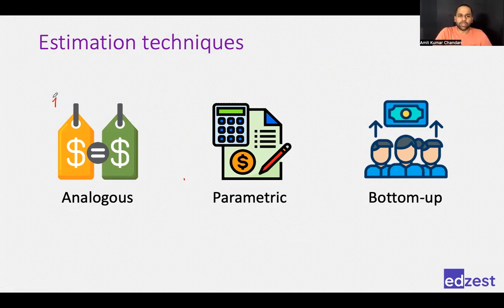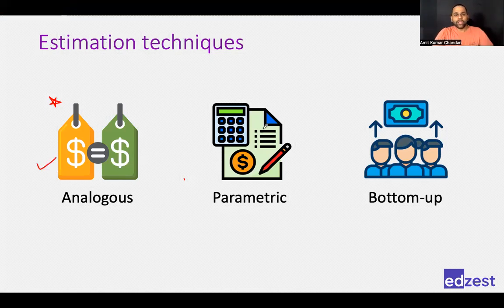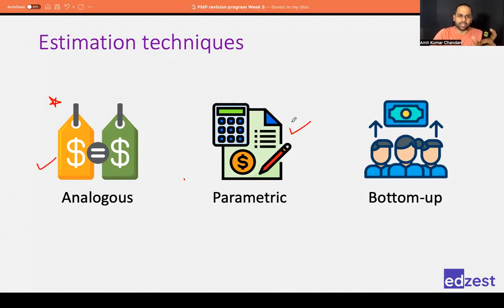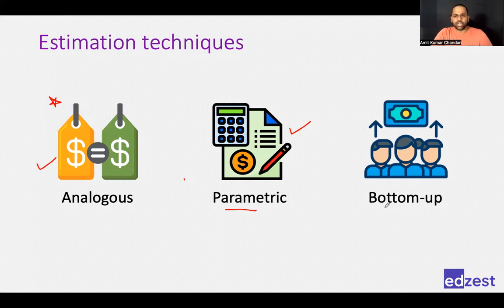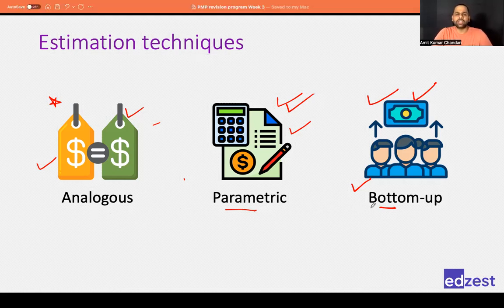What you need to know for the exam is when to use which technique and their advantages and disadvantages. If you have historical information and a like-to-like comparison, use analogous. If you have historical information but not like-to-like — some parameter and mathematical equation — use parametric. Bottom-up is breaking down to the lowest level and estimating; it is most accurate but time-consuming. Its accuracy depends on how accurate your historical information is.